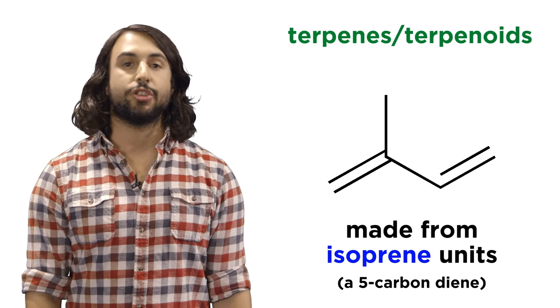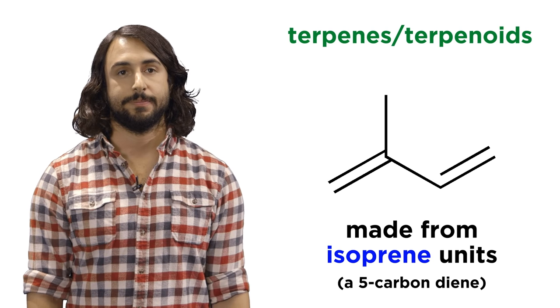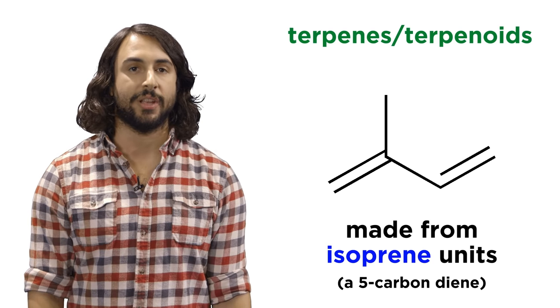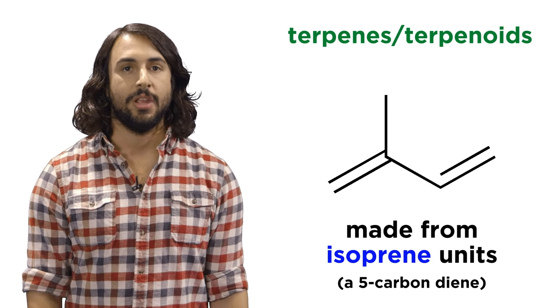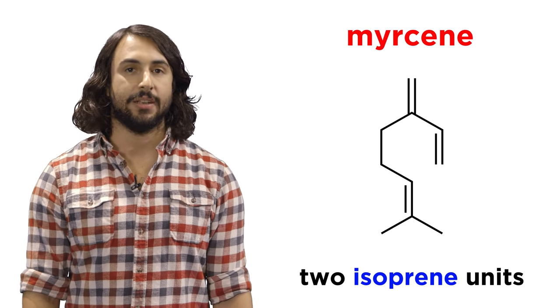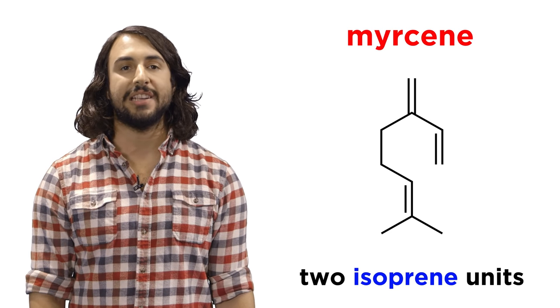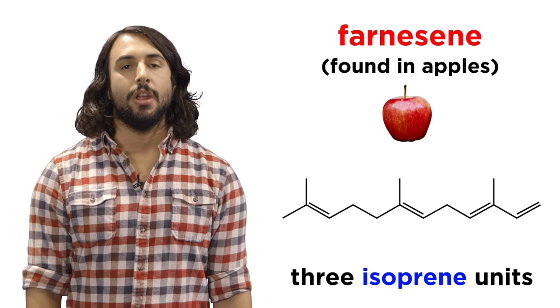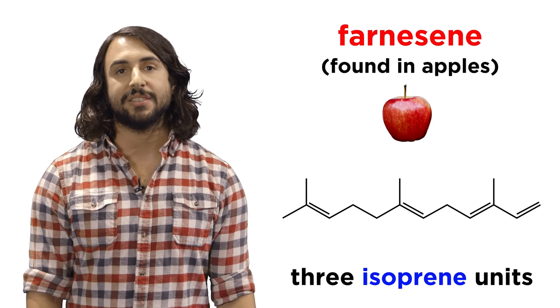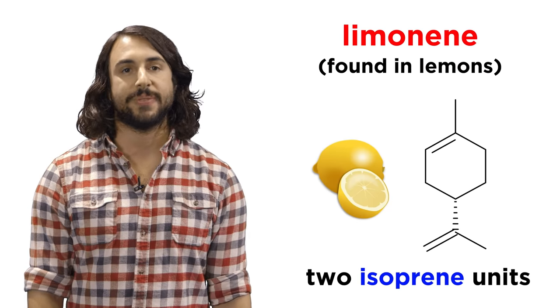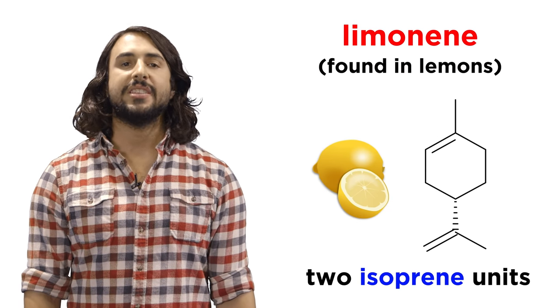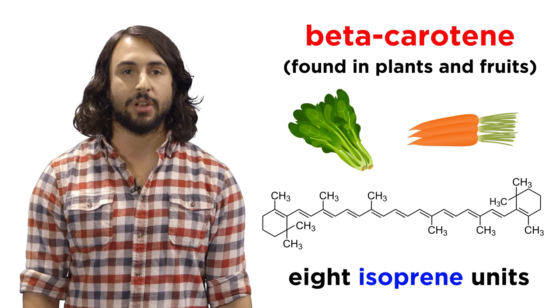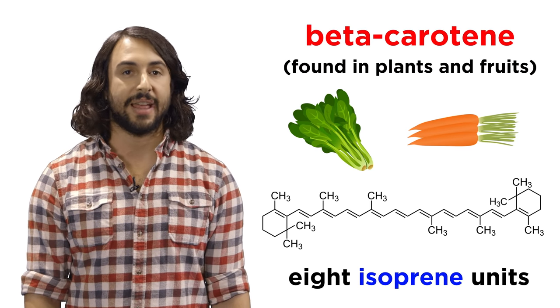Let's discuss another type of lipid, the terpenes and the terpenoids. These are polymers made up of repeating isoprene units, which is this five carbon diene. Here we can see myrcene, a terpene consisting of two isoprene units. Farnesene, found in apples, has three. The units can be linked to form rings, such as in limonene, which is found in lemons. These can get much larger, such as with beta-carotene, comprised of eight isoprene units, which is found in various plants and fruits.